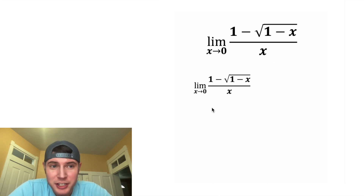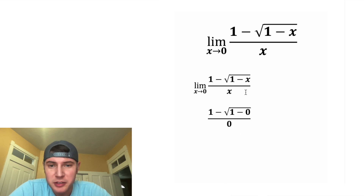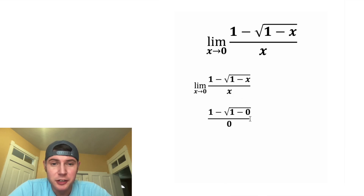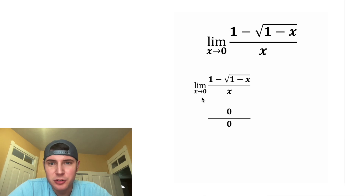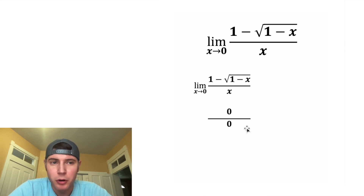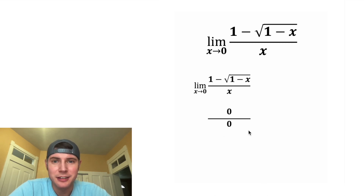Let's copy it down and try just plugging in 0 to see what happens. In place of both x's, I just plugged in 0. This minus 0 isn't doing anything, the square root of 1 is just 1, and 1 minus 1 is 0. By using direct substitution, we get 0 over 0, which is an indeterminate form — it isn't giving us any information. The answer could still be anything.